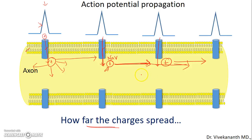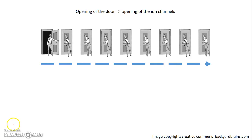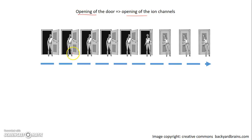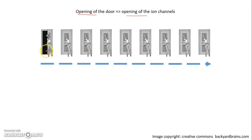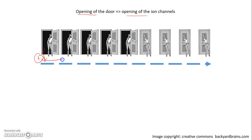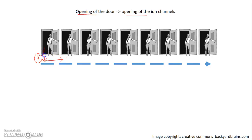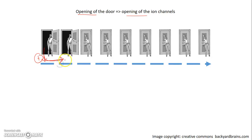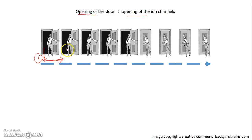I am going to use a door-opening analogy to explain how charge spread determines action potential velocity. Assume the opening of the door as the opening of voltage-gated ion channels. Once the door is open — that is, the voltage-gated ion channels are open — the positive ions come inside and spread. If they are spreading only for a shorter distance, it is able to open only one gate at a time.